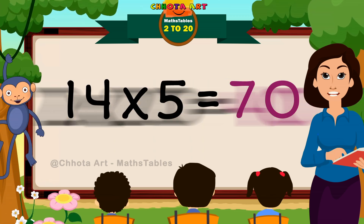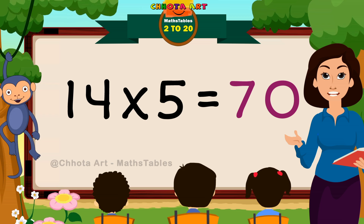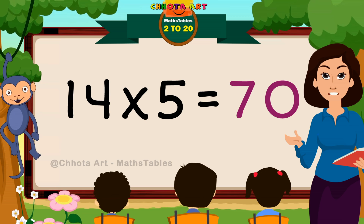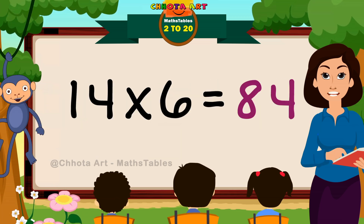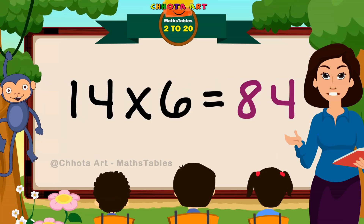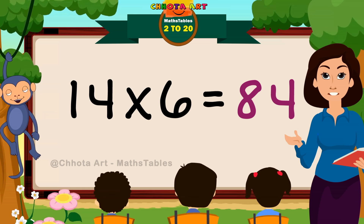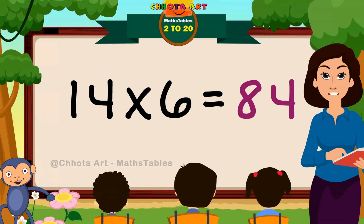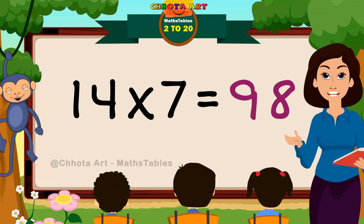14 fives are 70. 14 fives are 70. 14 sixes are 84. 14 sixes are 84.